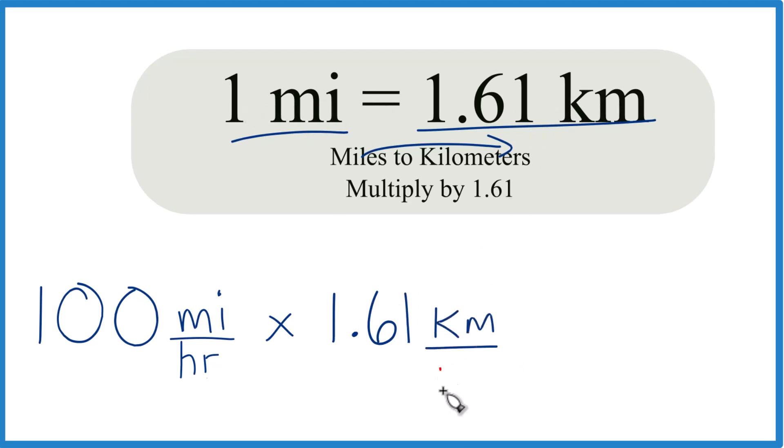Now we do the math: 100 times 1.61 equals 161. And because we have miles here and here, they cancel out. We're left with kilometers per hour. That's what we're looking for, kilometers per hour.